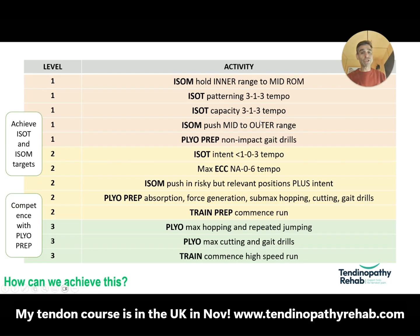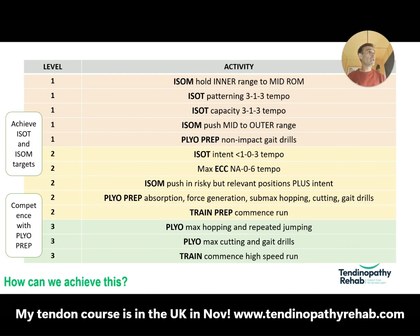Then we've got isometric push, which we bring in during this phase — mid-range, nudging into some outer range. You're still building capacity but starting to activate the nervous system by pushing instead of holding. For plyometric prep at level one, we're doing non-impact activities: non-impact hip drills like marches and hip drives, and non-impact ankle drills like walking on toes, walking on heels, heel-to-toe walking, and toe taps. These help prepare for plyometric activity and movement but are non-provocative.